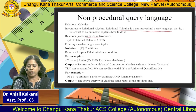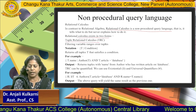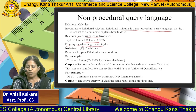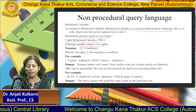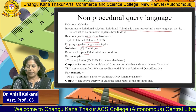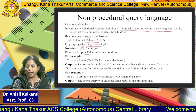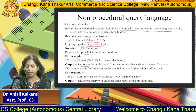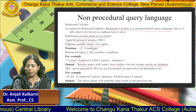Relational calculus exists in two forms. The first is Tuple Relational Calculus, denoted TRC, where the filtering variable ranges over tuples. The notation is {T | condition}, returning all tuples T that satisfy the condition. For example, {T.name | Author(T) AND T.article = 'Database'} returns tuples with the name of authors who have written an article on Database.